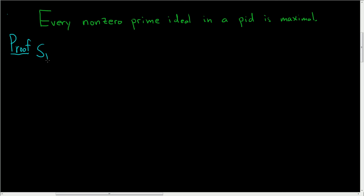So suppose that R is a PID and I is a non-zero prime ideal. And the claim here is that I is maximal. So claim: I is maximal.